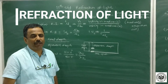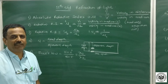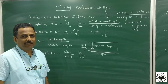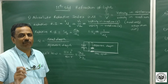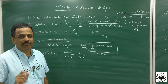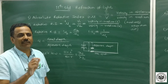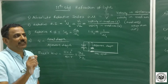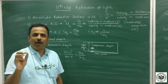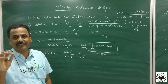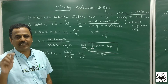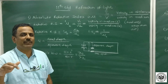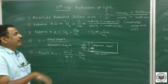We are going to deal with the topic called refraction of light from 11th standard. Refraction of light means it is basically the change in velocity of light in different mediums, and then it is converted into ratios called refractive index — that is, velocity of light in rarer medium upon velocity of light in denser medium. Rarer medium means air or vacuum, and denser medium means any other medium.